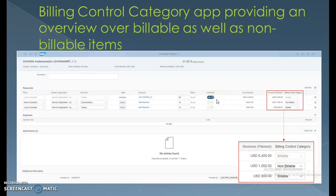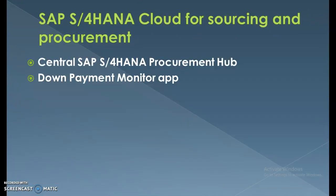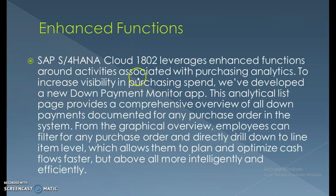SAP S4 HANA Cloud for sourcing and procurement introduces a central procurement app and the new Down Payment Monitor app in the 1802 release. Enhanced functions around purchasing analytics increase visibility in purchasing spend. The Down Payment Monitor app's analytical list page provides a comprehensive overview of all down payment documents for any purchase order in the system. From the graphical overview, employees can filter by purchase order and drill down to the line item level, allowing faster and more intelligent cash flow optimization.